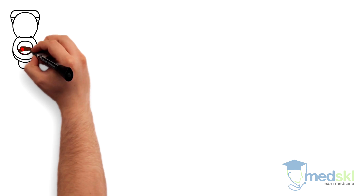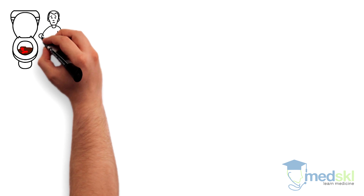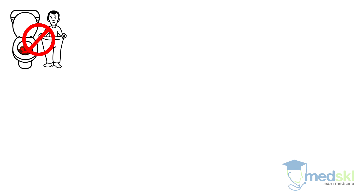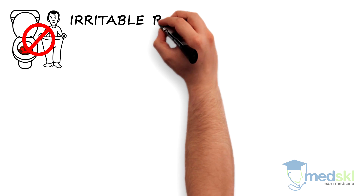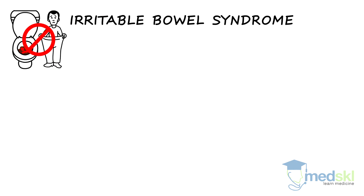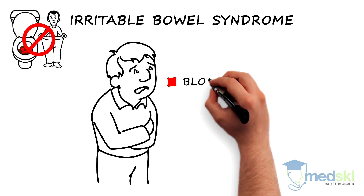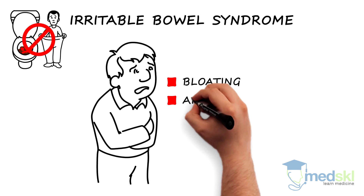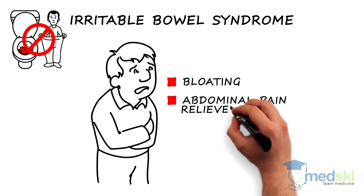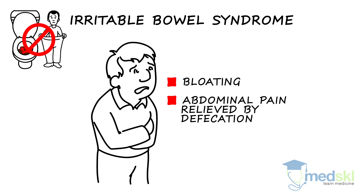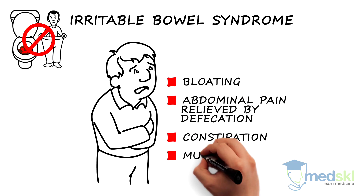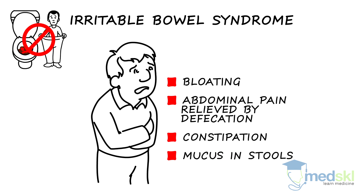Having excluded the above, most patients, especially without warning symptoms such as bleeding or weight loss, will have diarrhea-predominant irritable bowel syndrome, an entity which may also be accompanied by bloating, abdominal pain relieved by defecation, constipation, and mucus in the stools.